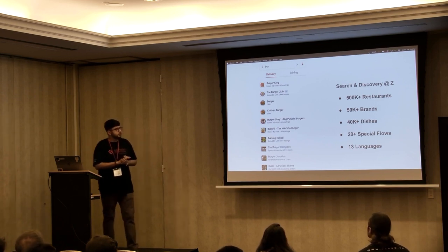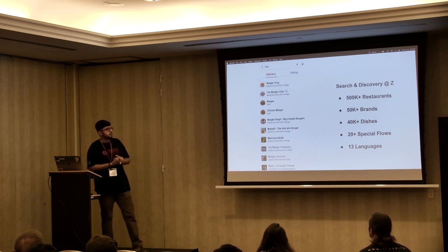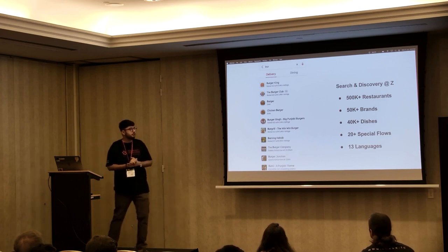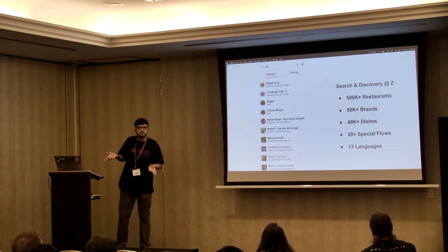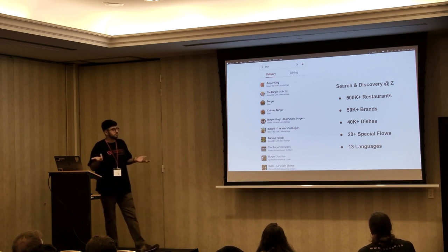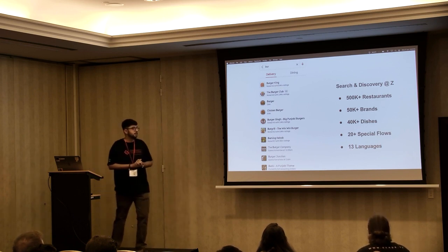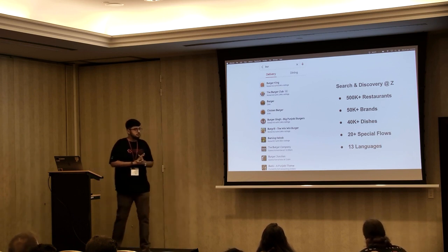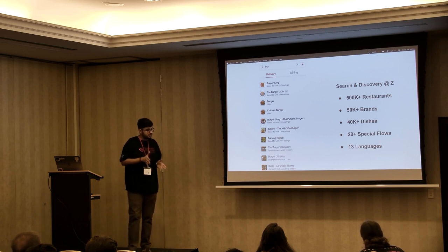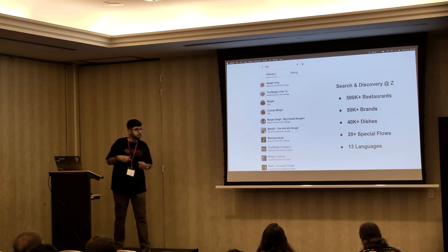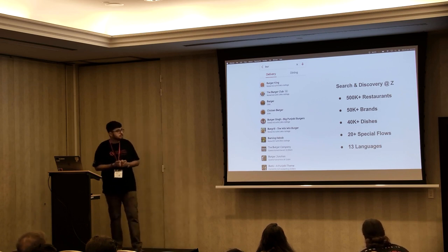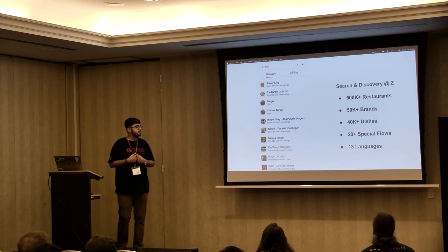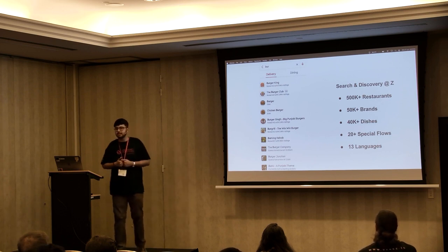We have around 500,000 restaurants for delivery, 50k brands, 40k dishes — which is an extreme classification problem. We have 20 special flows, which are basically entry points to our other businesses on our search. And we support 13 different languages.